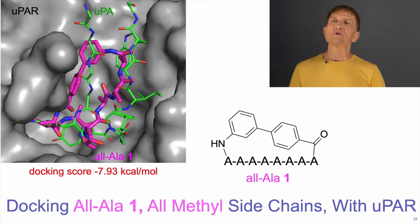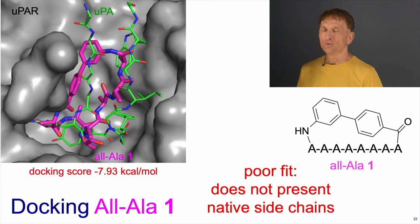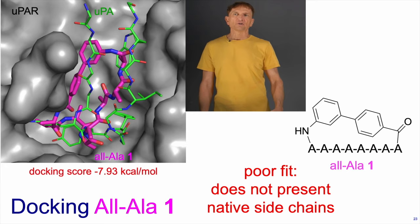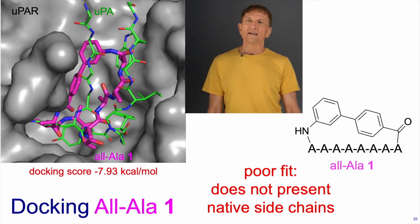When we try to dock the all-Ala peptide with UPAR it finds a home on the protein surface, but it's not quite like that of the native protein-ligand loop. We expect this because that backbone conformation isn't displaying the side chains. In our view, the receptor looks at those side chains like a glove looking for the right hand to fit in — it needs those side chains to form the correct interactions at the protein-protein interface.